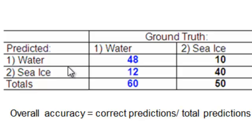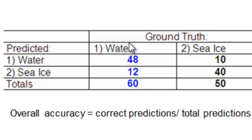We have ground truth points — these are GPS points where on the ground we determined whether it was water or sea ice. The columns represent ground truth and rows represent our classified raster, or the predictions for each of those locations on the ground.